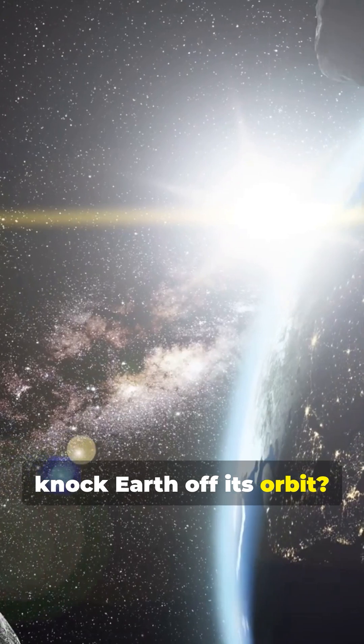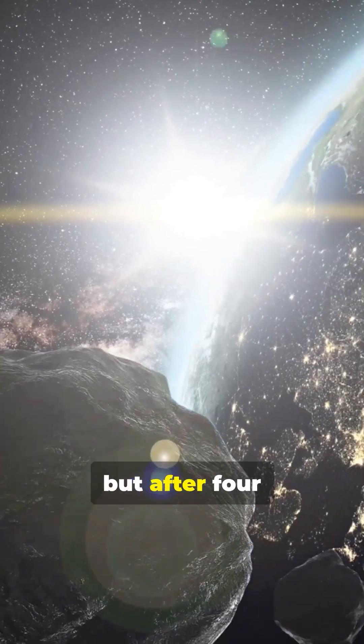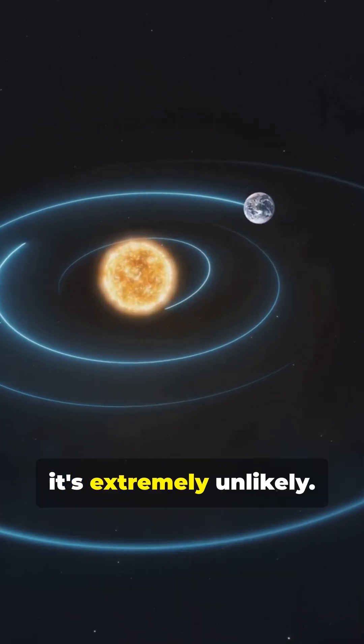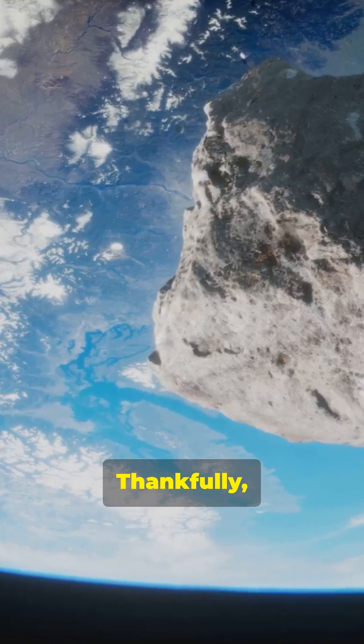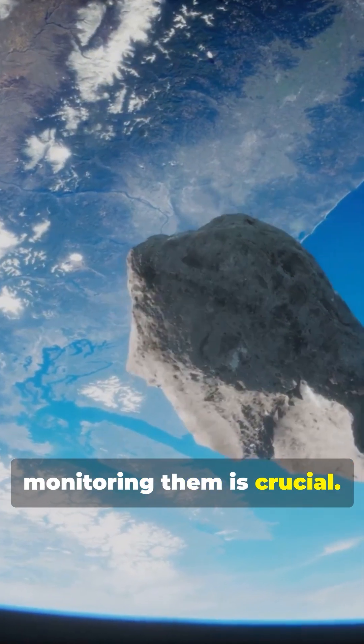Could passing stars knock Earth off its orbit? Possible, but after 4 billion years of a stable orbit, it's extremely unlikely. Thankfully, space threats remain distant, but monitoring them is crucial.